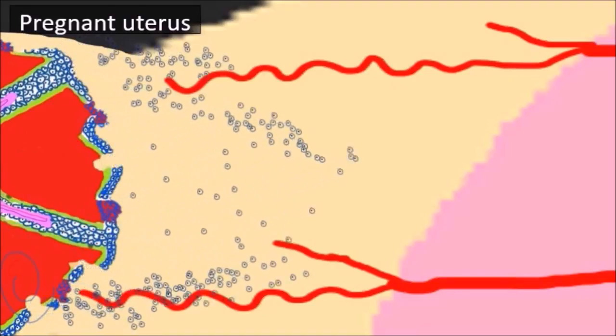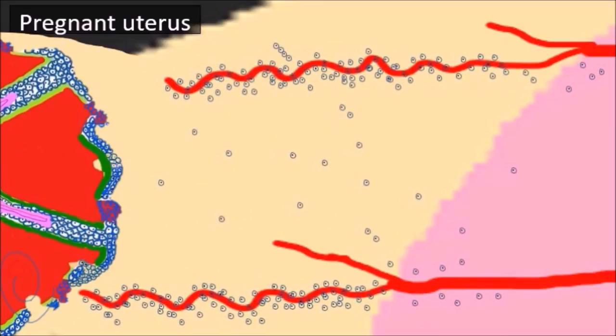During normal pregnancy, cytotrophoblastic cells migrate outside the developing placenta. They migrate into the decidua and part of the myometrium. This is called trophoblastic invasion, and these cytotrophoblastic cells are called extravillous cytotrophoblasts because they don't share in the formation of the villi.